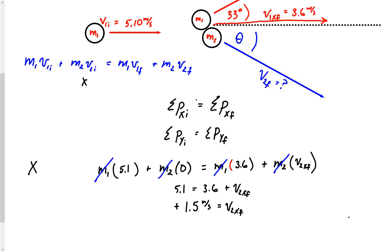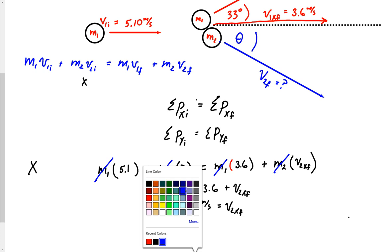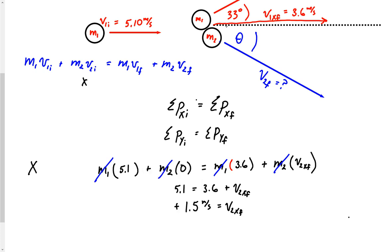So in other words, here's what I now know. I know that after this collision has taken place, I'm going back up here to the top. Now, I know that the velocity 2x final is positive 1.5 meters per second. Cool.